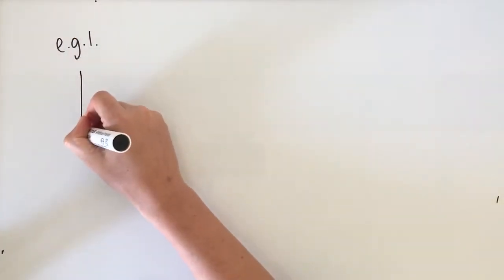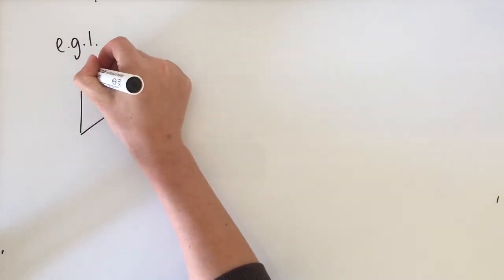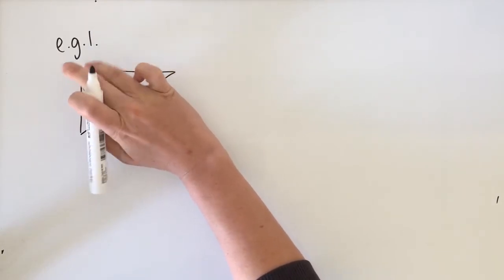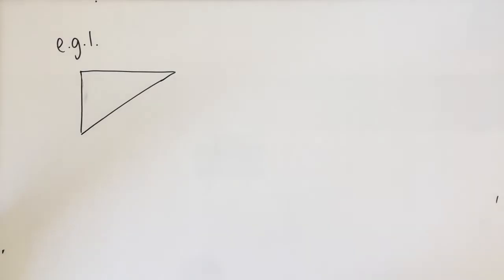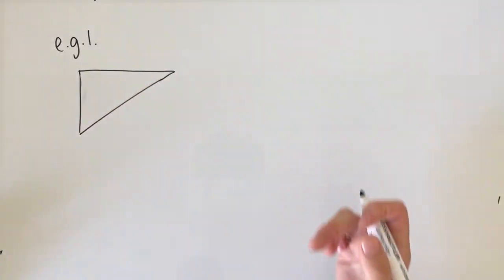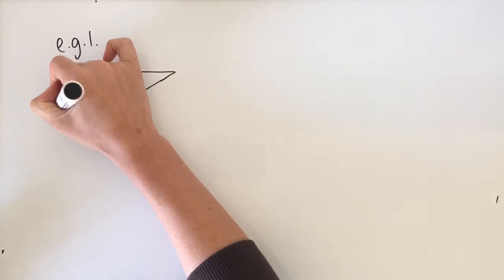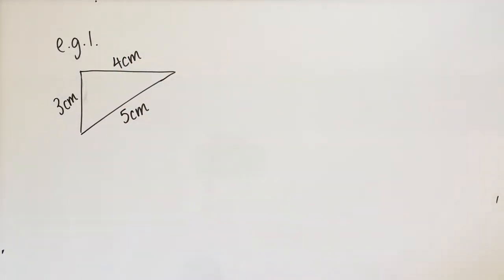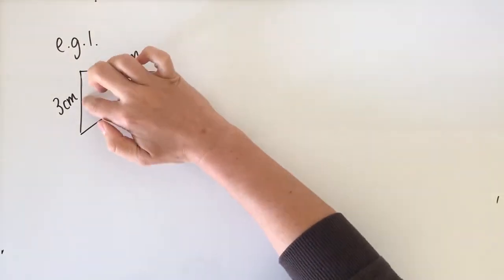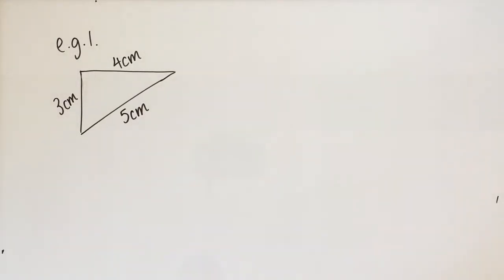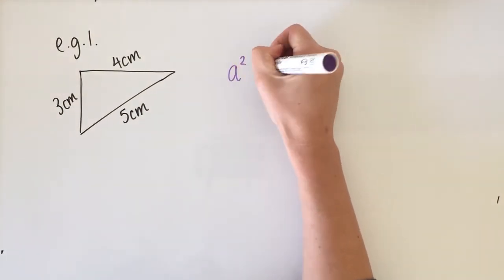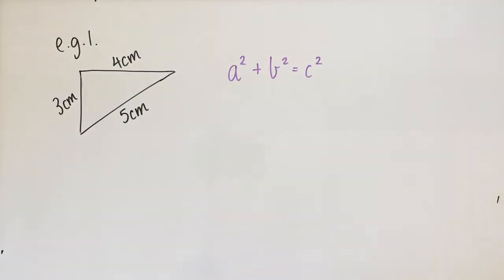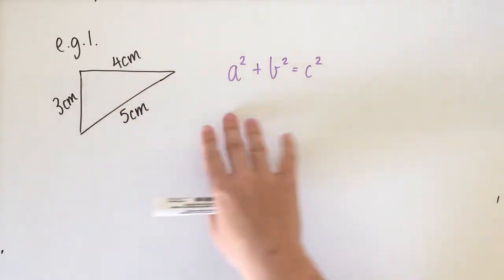Going back to our learning intention — to prove whether a triangle is right-angled or not — our first example has a triangle with sides 3 centimetres, 4 centimetres, and 5 centimetres. We want to decide whether this is right-angled. The first thing we do is write down Pythagoras' formula: a squared plus b squared equals c squared. We need to make sure the sides correspond with this formula.